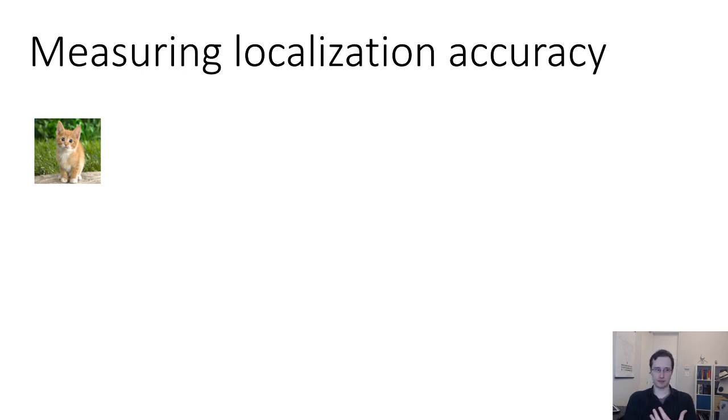All right, now before we actually discuss methods, we should talk a little bit about how we measure accuracy for localization. When we were doing object classification, it was pretty easy to measure accuracy because we could just say, well, you're correct if you got the right class, you're incorrect if you got the wrong class, and you want to know on what percentage of the images did you get the correct answer.